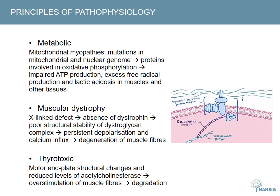Duchenne-type muscular dystrophy is caused by a recessive deletion or defect in the short arm of chromosome X, leading to an absence of intracellular anchoring provided by dystrophin.